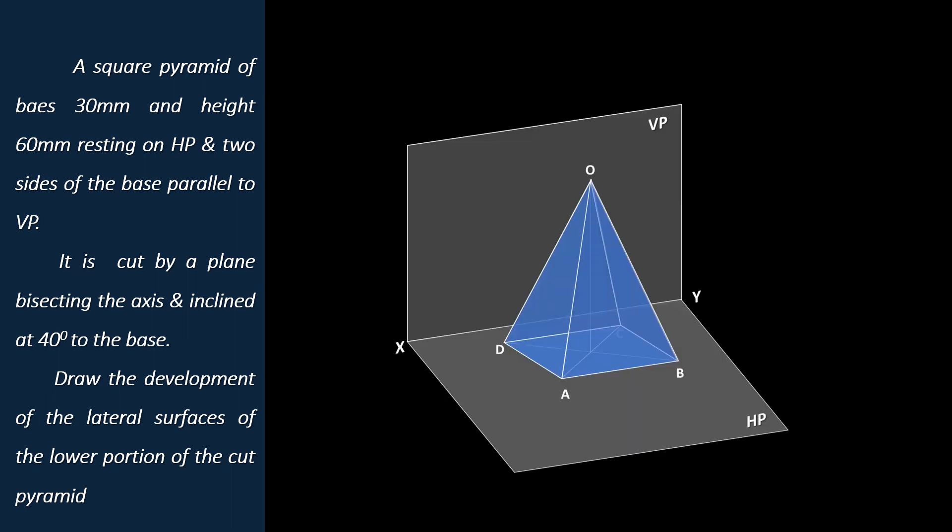Consider a square pyramid with base edge A, B, C, D and apex or vertex O. It is given that two sides of the base is parallel to VP. Here we place the base edge AB and CD as parallel to VP. Let's begin with the orthographic projection of the solid.